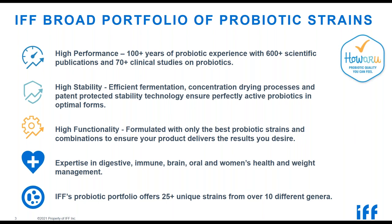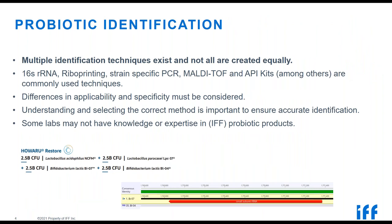To start with probiotic identification, there are multiple different identification techniques that exist, and they're not all created equally. Some terms you may have heard are 16S rRNA, riboprinting, strain-specific PCR, MALDI-TOF, and API kits. These are all commonly used within the industry, but differences in applicability and specificity must be considered. Selecting the correct method is really important for ensuring accurate identification, and some labs may not have knowledge or expertise specifically in IFF probiotics to understand how to accurately identify our probiotics.